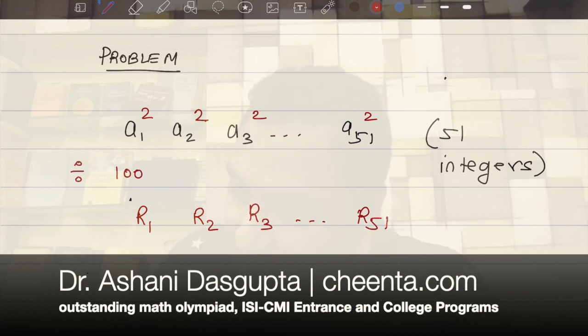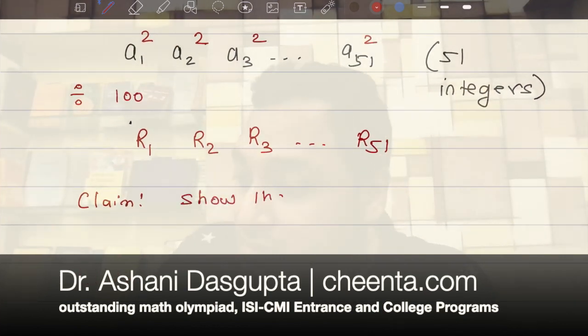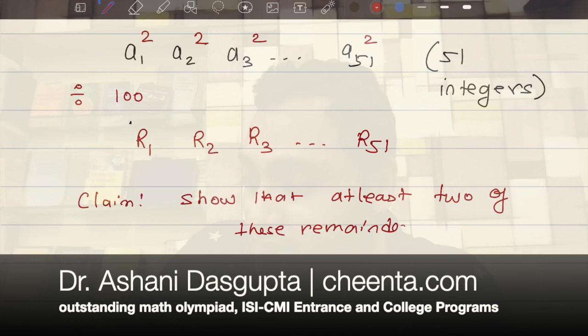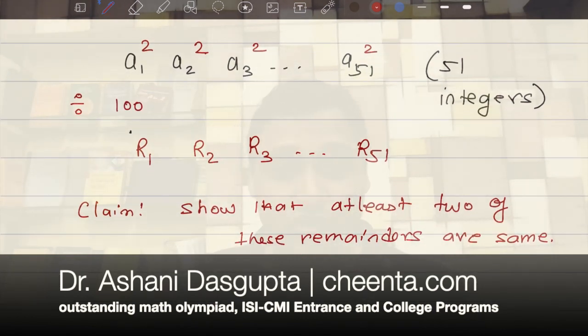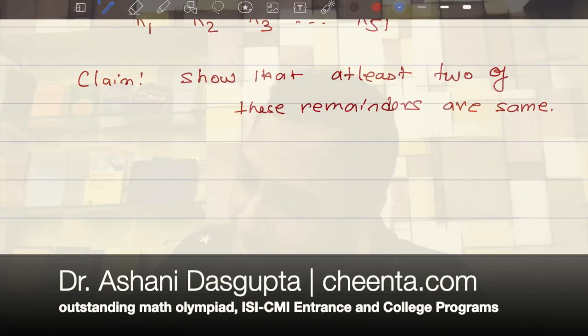Here is the claim that we want to prove. Show that at least two of these remainders are same. Okay, so maybe you can try this problem, but before you do it, I want to share a strategy with you that is not only useful in this problem, it is useful for many other problems of similar type.